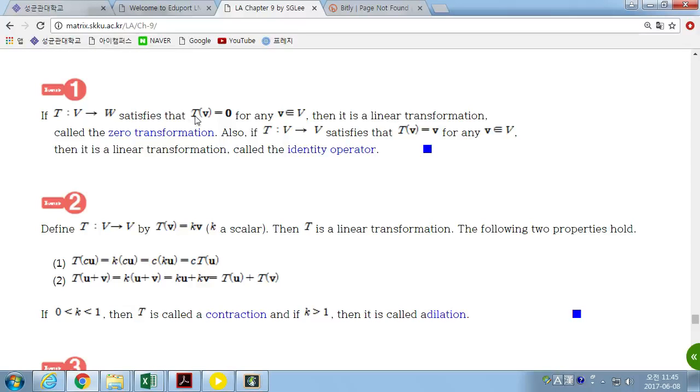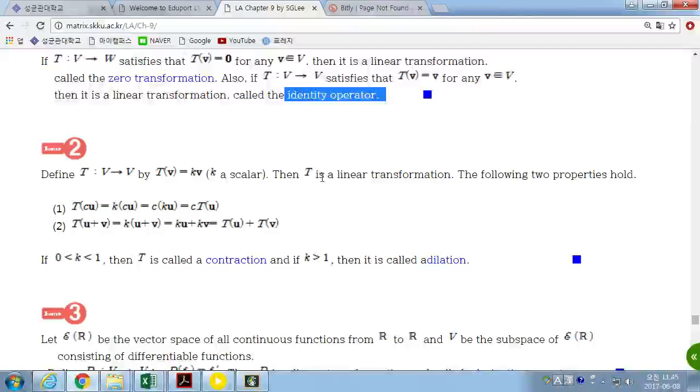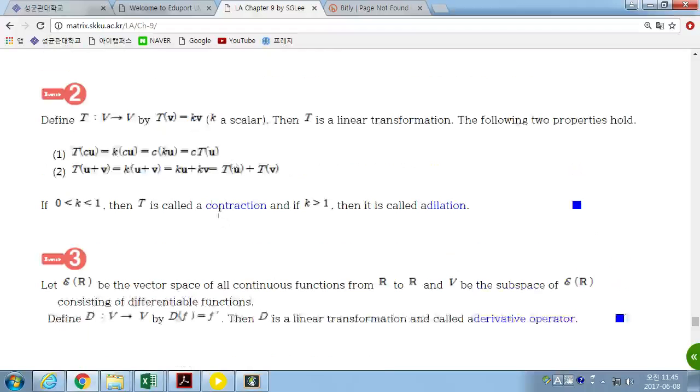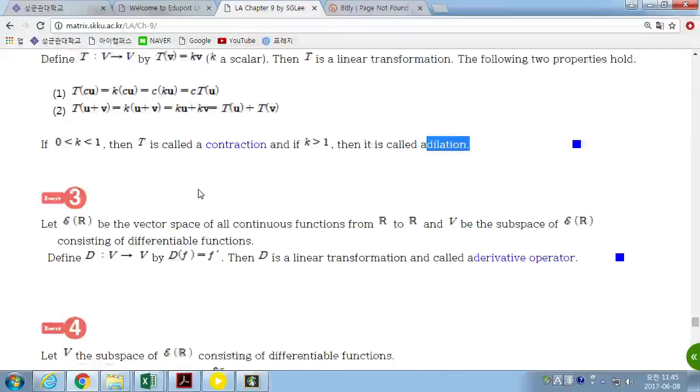And we defined the zero transformation and identity operator. Identity transformation before. And also, if the contraction mappings and dilations were defined in chapter 6, it makes the same work here, too.